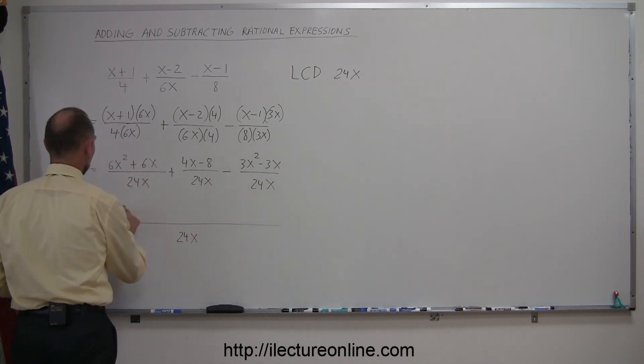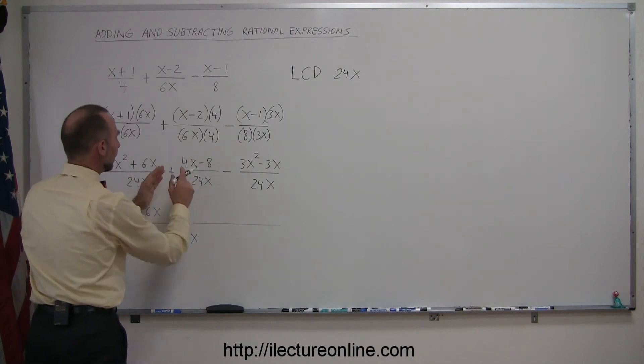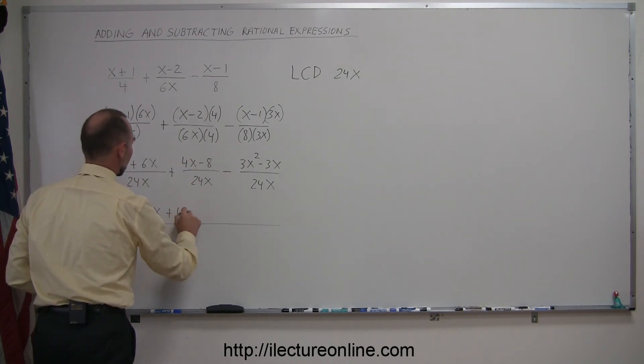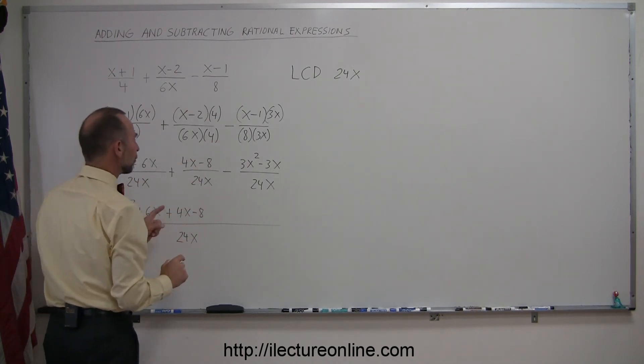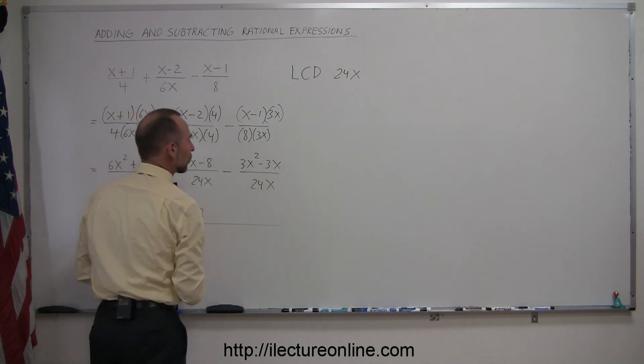So on here we have 6x squared, plus 6x. Then we add to that 4x minus 8, and then we subtract from that the 3x squared minus 3x.